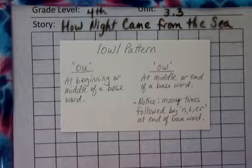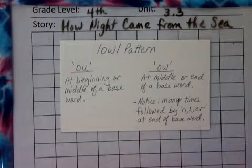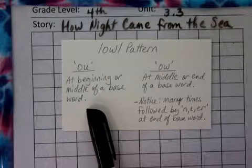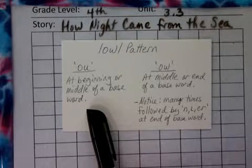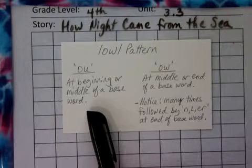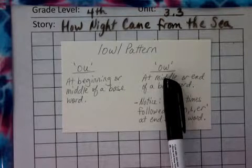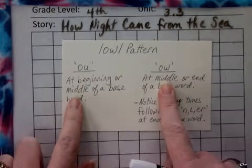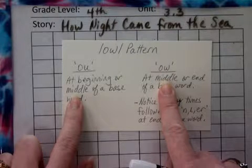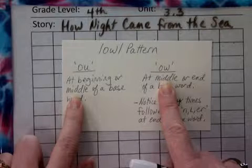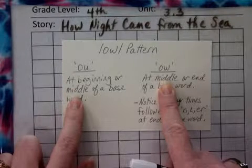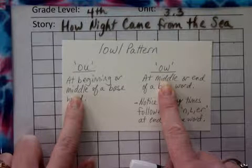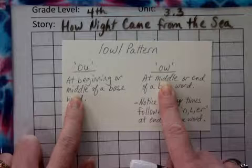OW can be spelled two different ways. Typically, OW spelled as O-U is going to be seen most of the time at the beginning or the middle of a base word. The spelling O-W is going to be most of the time in the middle or the end of the base word. So if you see it in the middle, it could be either spelling — O-U or O-W — so you just have to remember or memorize which one it is. I'm going to organize your words with O-W words first, and then O-U spelling words after that.